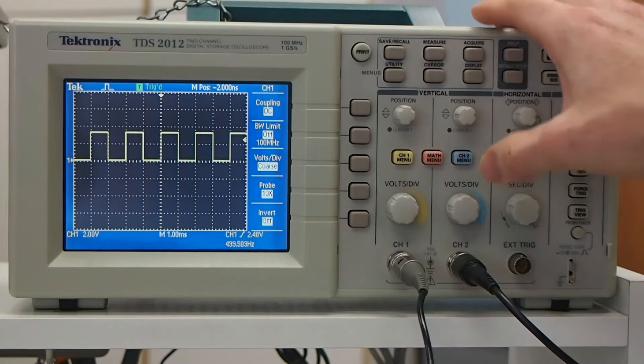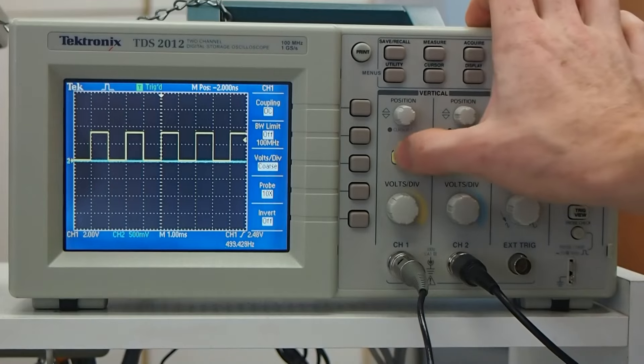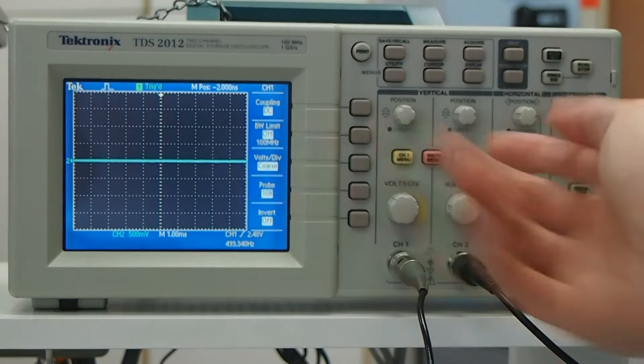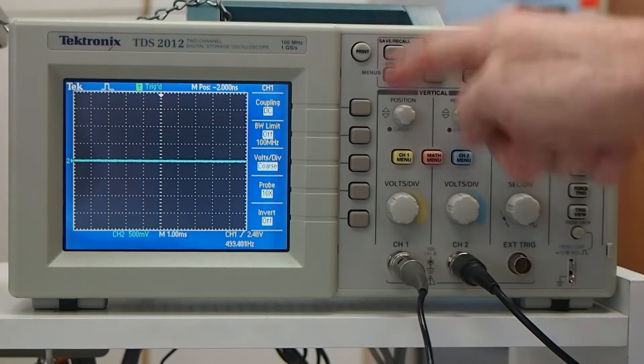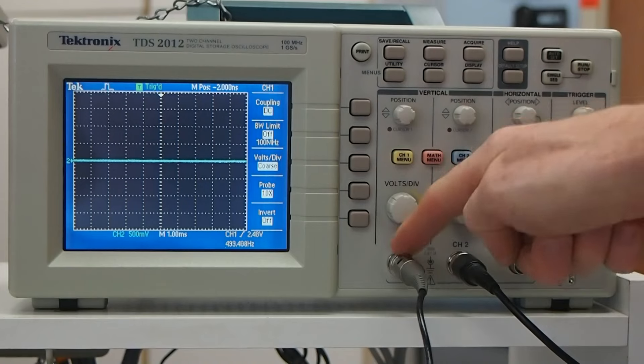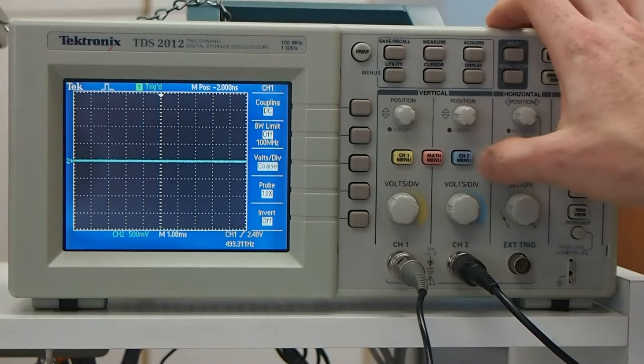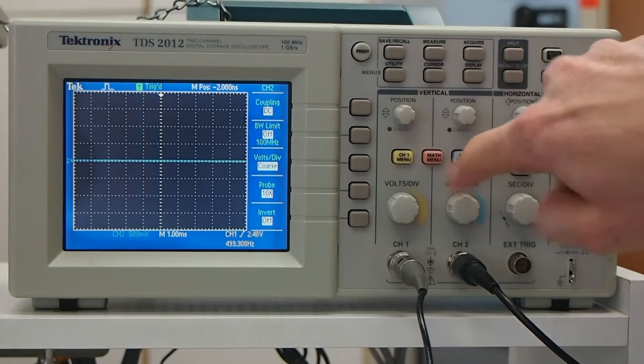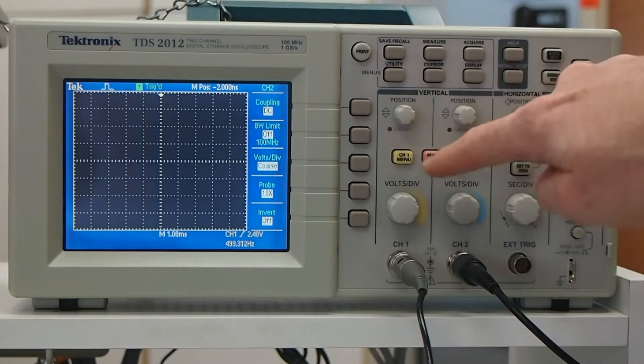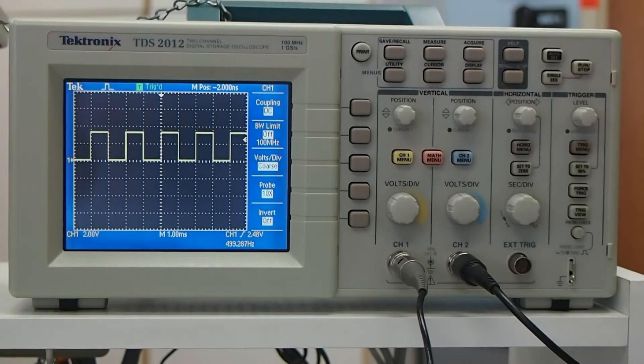There's a couple other things that are useful to know. So if the oscilloscope starts up in a situation where you only see like a blue line, you're looking at the blue channel, channel number two, and you plugged your circuit into the yellow channel, channel number one, you can turn the channel off just by pressing the button a couple of times, and then turn the channel on that you want just by pressing once.